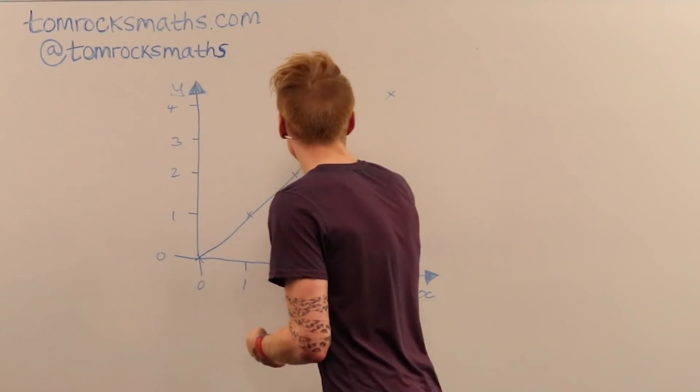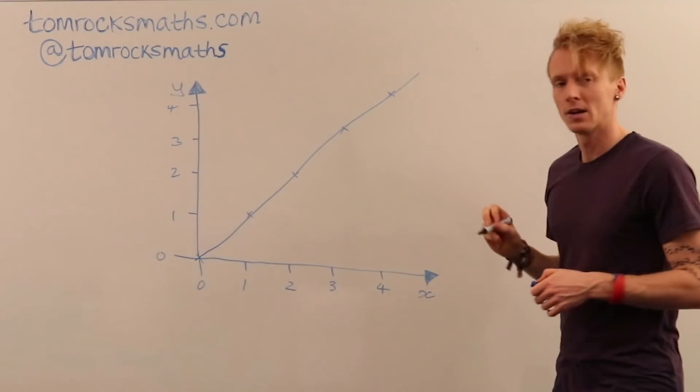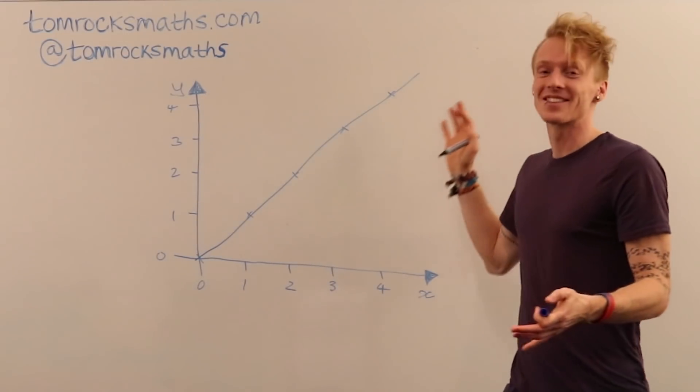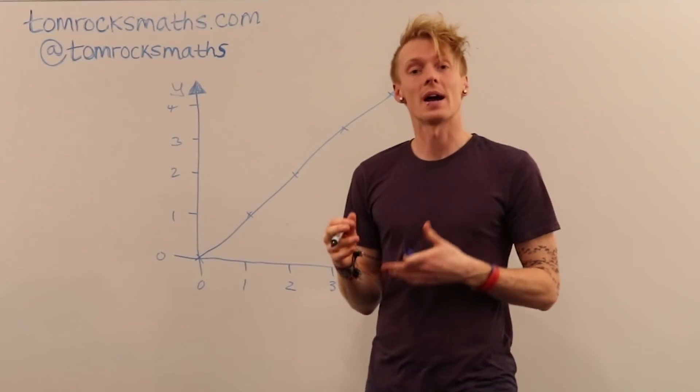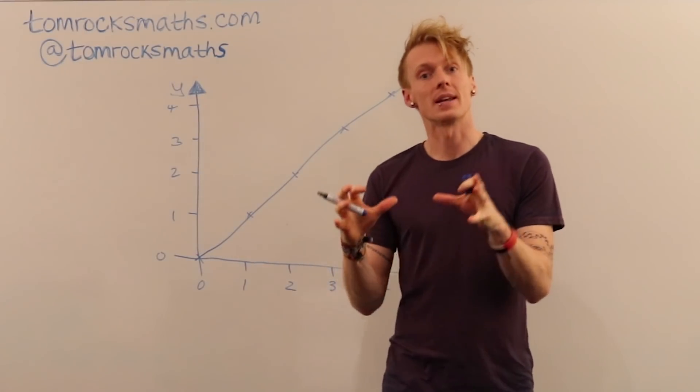And so the graph is just going to join up all of these points. So we get this lovely straight line passing through all of these points and that is y equals x, the simplest case.